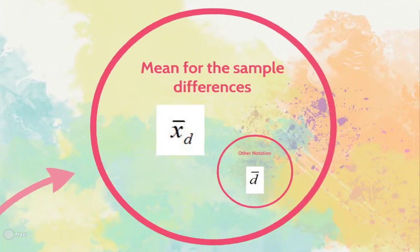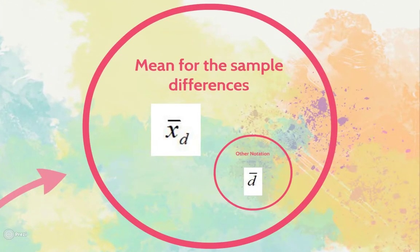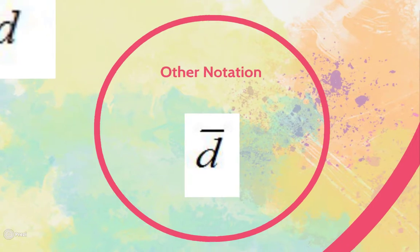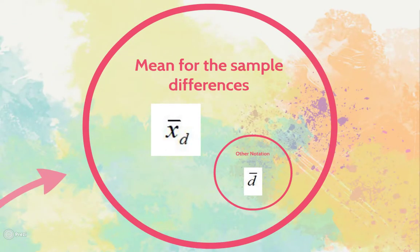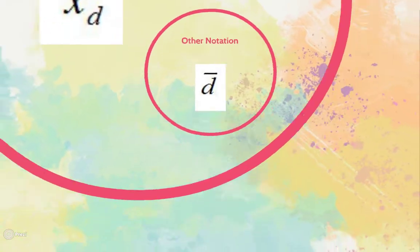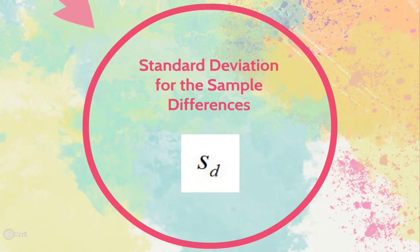When we move into the sample mean of differences, we'll use x bar sub d, or some other notation included in the book would be d bar. Both of these indicate means for the sample differences. Some people use x bar sub d and the textbook uses d bar, both of which mean the same thing. Finally, our standard deviation for the sample differences still uses s, but because it's in the context of differences, it will use a subscript d.